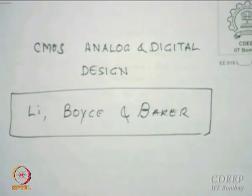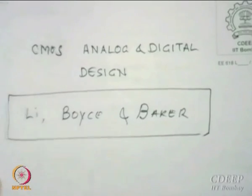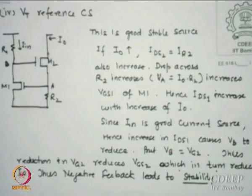This is a good chapter there. The values given are essentially for very old technology, 5 microns, but that does not matter - the principle behind it can be applied to any technology node later. I start with another reference called the VT reference current source.